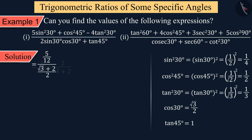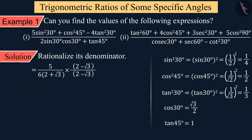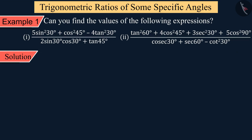Therefore, the value of the equation is obtained as 5/6 multiplied by √3 plus 2, which simplifies to 5(2 − √2 − √3) upon 6.